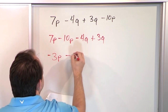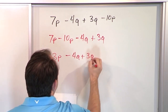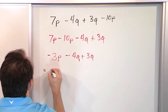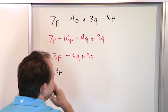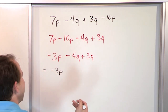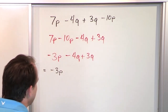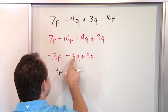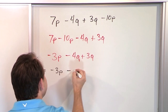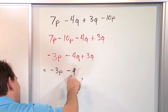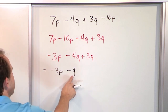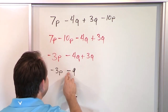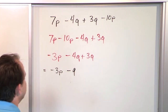Then we have negative 4Q plus 3Q. We have mixed signs, so we subtract: 4 minus 3 is 1. The sign goes with the larger absolute value — the negative 4 has larger absolute value — so it's negative 1Q. When you have negative 4 plus 3, the answer is negative 1, so it is negative 1Q. The final answer is negative 3P minus Q.